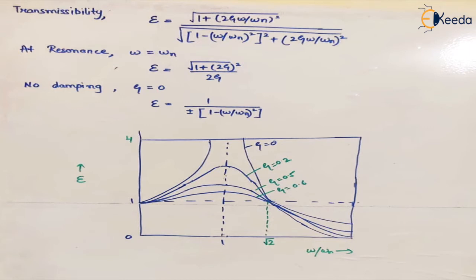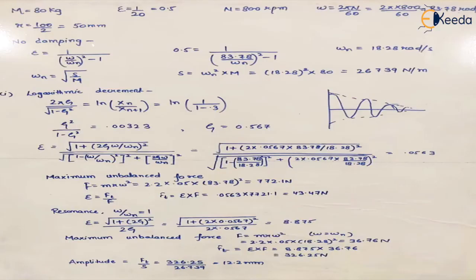We have already discussed the formulae for transmissibility. At resonance, a specific formula is used, and for no damping, another formula applies. Considering the case with no damping, epsilon becomes equal to 1 upon (omega/omega_N)² minus 1. We already know the value of epsilon which is 0.05 and omega is known, so we can find the value of omega_N. When there is no damping, the natural frequency omega_N comes out to be 18.28 radians per second.